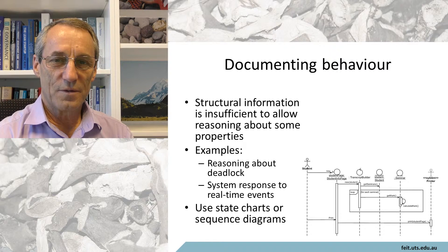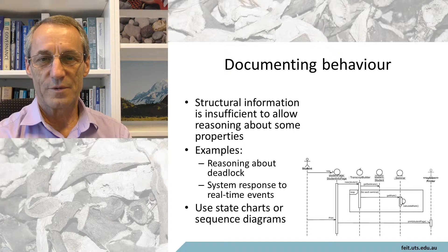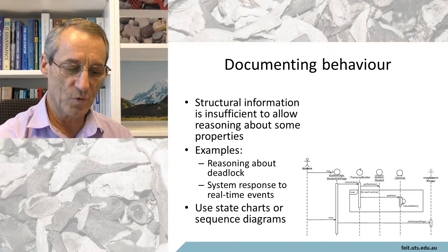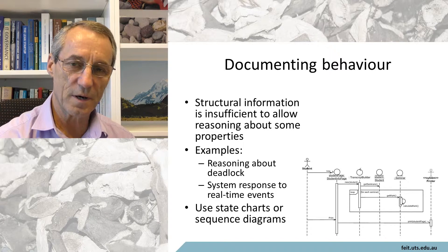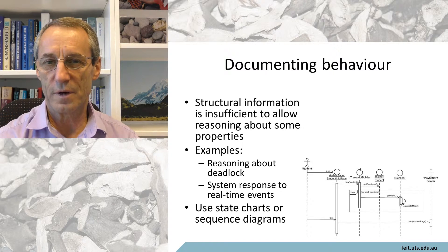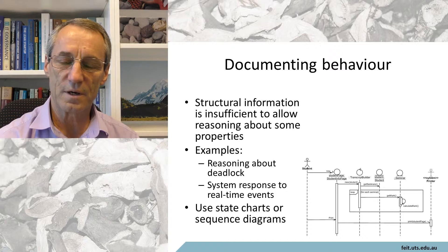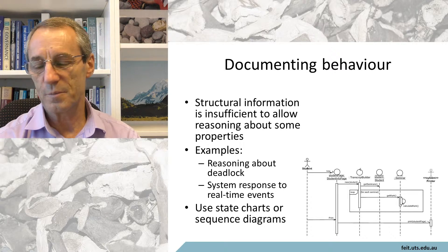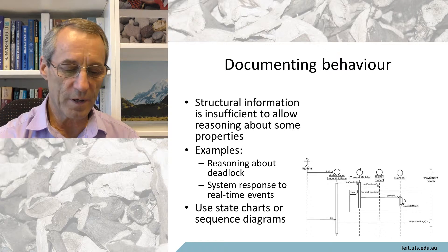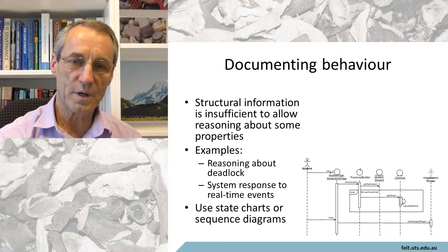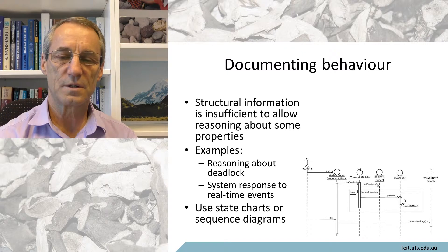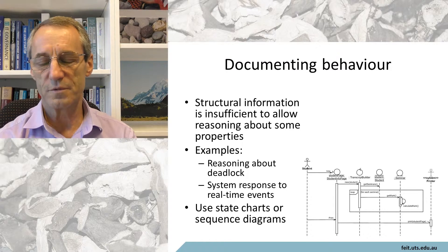We know about documenting the static view — the class diagram view. But for documenting behavior, it's normally the sequence diagram that we use. Some people use an interaction diagram or communication diagram, and some people like Petri nets, but Petri nets more or less correspond to state diagrams anyway. Documenting behavior is different from documenting the static view of the architecture, and there are a number of ways of doing it.